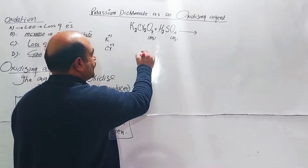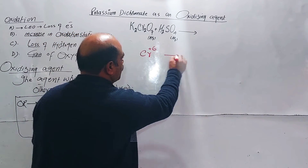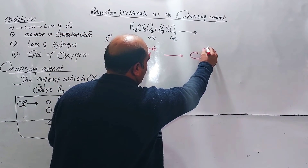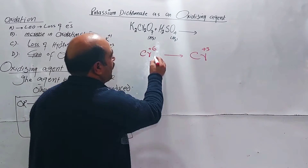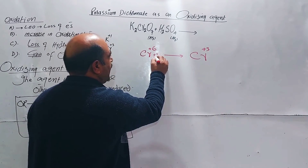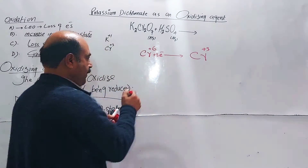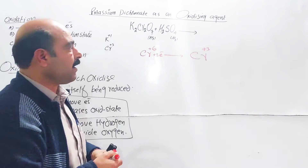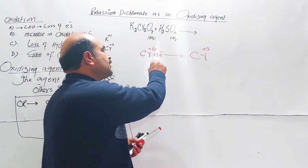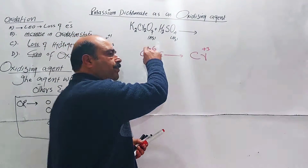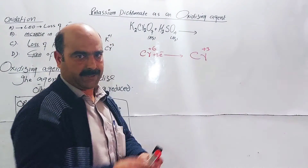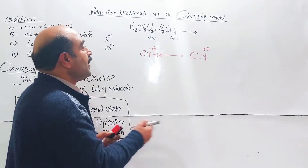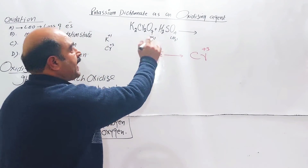Chromium will be reduced from plus six to plus three. That means there are three electrons gained — gain of electron means reduction. And if it is reduced, the student confirms it is the oxidizing agent. Simple. Clear.